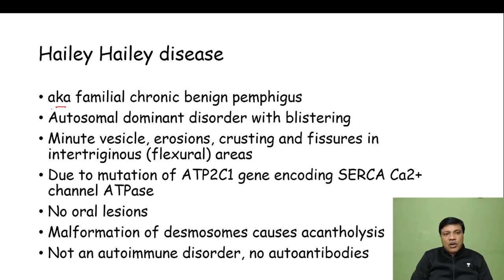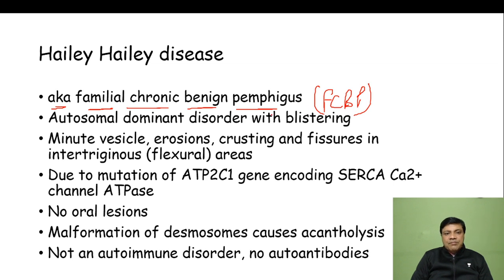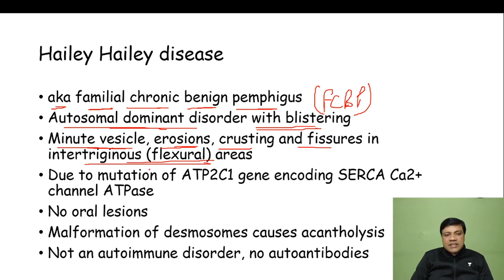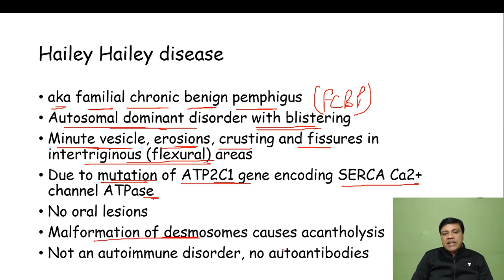Haley-Haley disease is also called familial chronic benign pemphigus. It is an autosomal dominant disorder with blistering, characterized by minute vesicles, erosions, crusting, and fissures in the intertriginous area. It is due to a mutation in the ATP2C1 gene encoding the SERCA calcium channel ATPase. There is malformation of desmosomes causing acantholysis. It is not an autoimmune disorder — there are no autoantibodies, so direct immunofluorescence (DIF) will be negative.